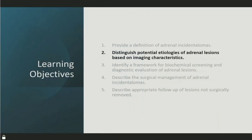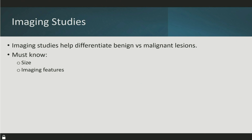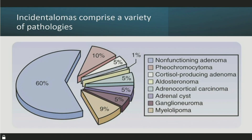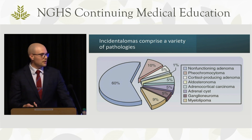Potential etiologies of adrenal lesions include a wide variety of pathologies, but the majority will be a non-functioning adenoma — benign — and most will not necessarily need an adrenalectomy. We'll talk about the indications for surgery shortly. The two key distinctions are benign versus malignant, and functioning versus non-functioning.